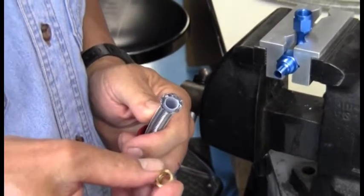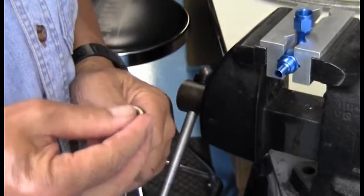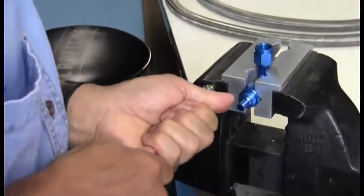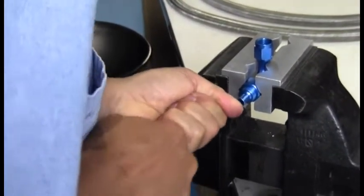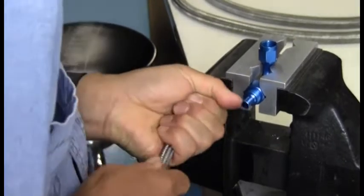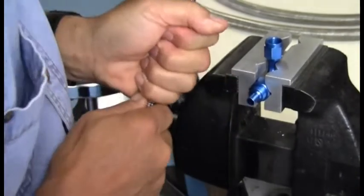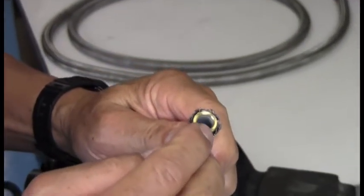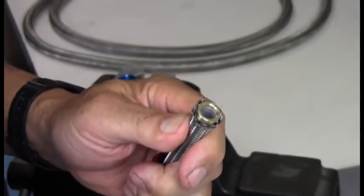The next step is to install the olive or ferrule. You can push it up against the vise to make sure it's seated all the way, and if you look inside you can see that the Teflon liner is bottomed against the ferrule.